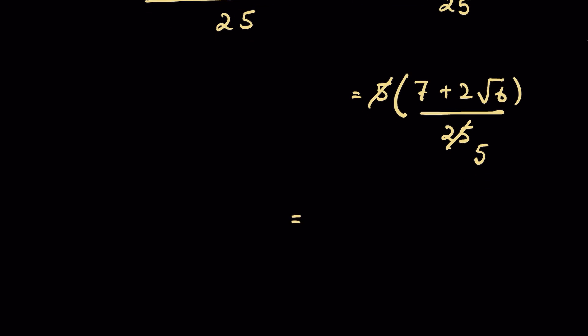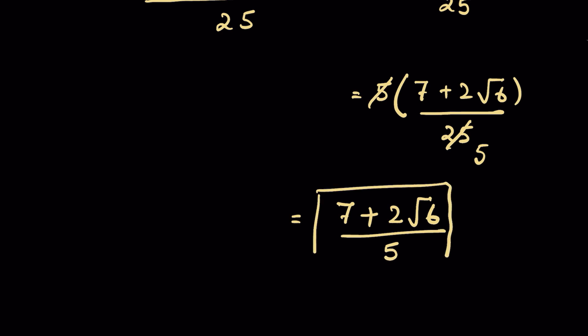Dividing, our final answer is (7 + 2√6) / 5. This is how we simplify radicals.